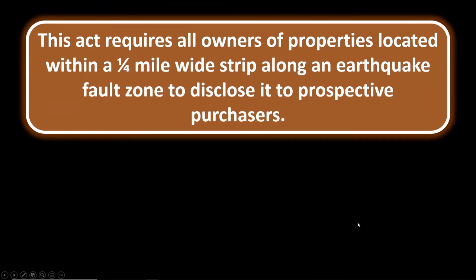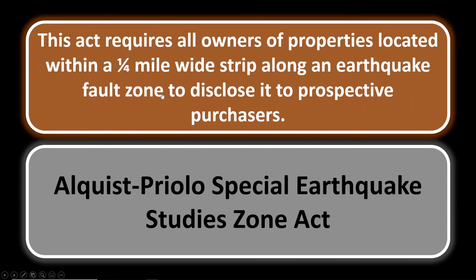Real estate practice number four: what act requires all owners of properties located within a quarter-mile-wide strip along an earthquake fault zone to disclose it to prospective purchasers? It's a quarter mile wide — an eighth of a mile on each side from the center of the fault line, though this varies based on topography. The act is the Alquist-Priolo Special Earthquake Studies Zone Act.